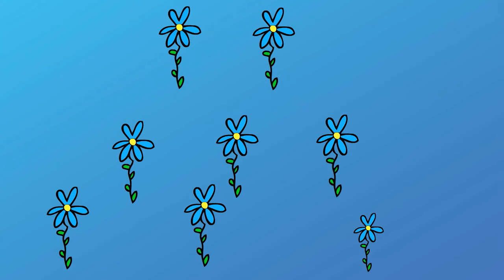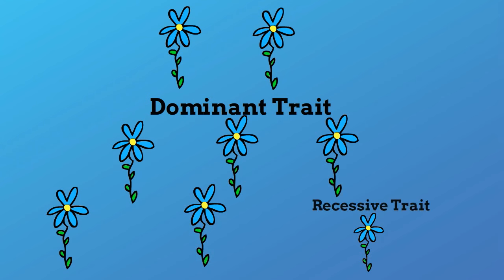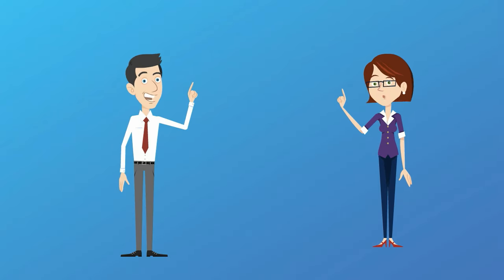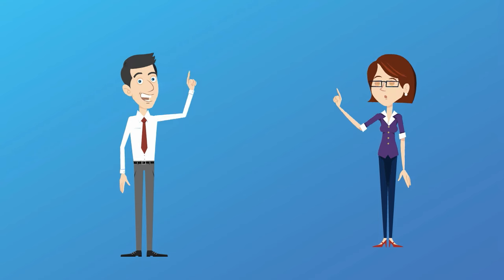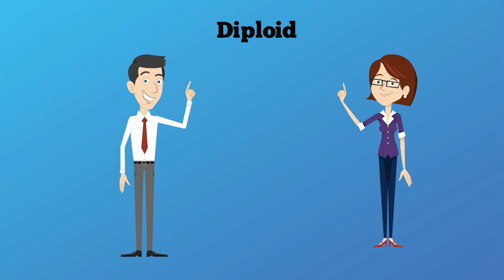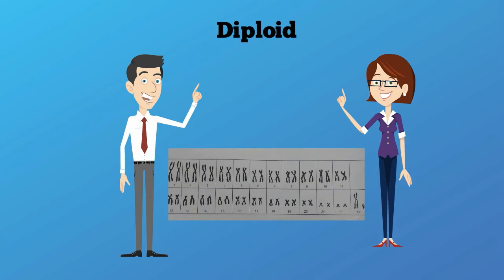He classified the first generation trait as the dominant trait, and the trait that was masked or covered up as the recessive trait. The reason that you get dominant and recessive traits is that you get one copy of the trait from your mother and another from your father. Most human cells are considered diploid because they contain a set of chromosomes. This helps explain why you look similar to your mom and dad, but not exactly.